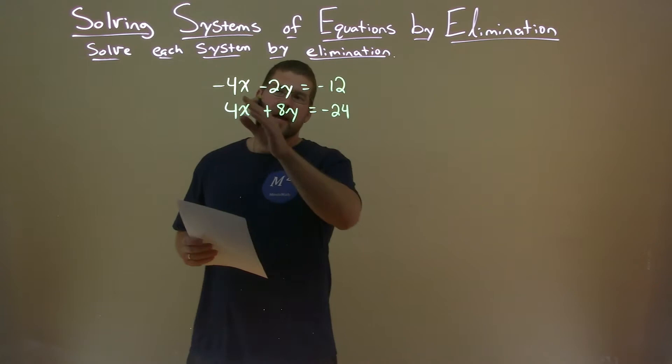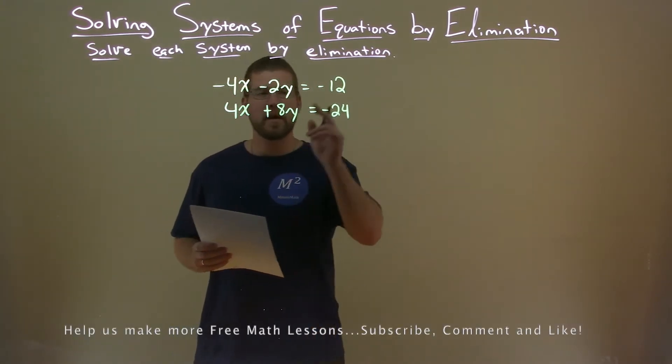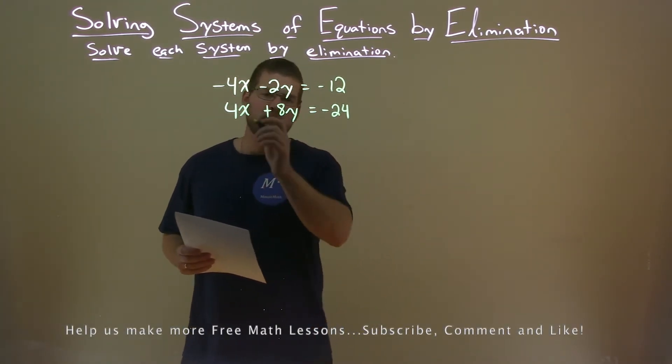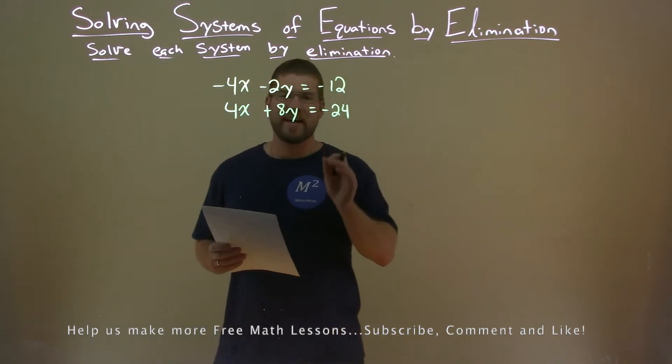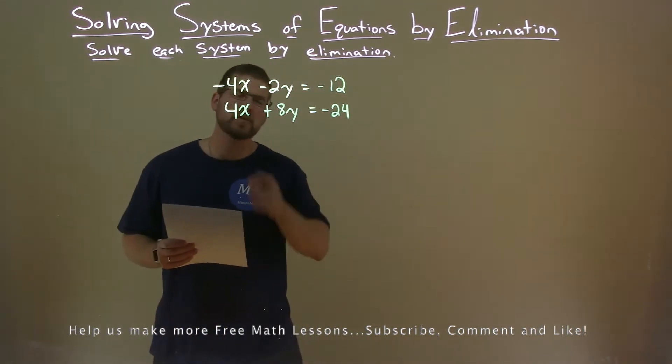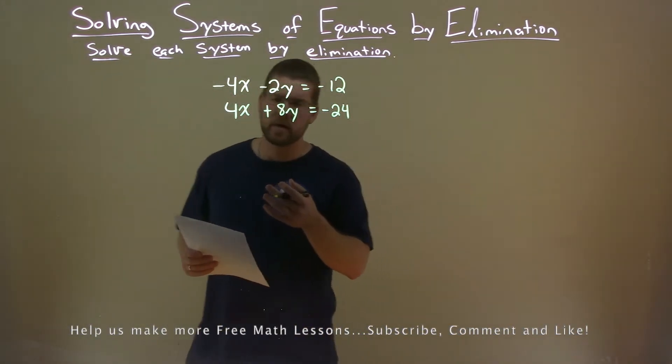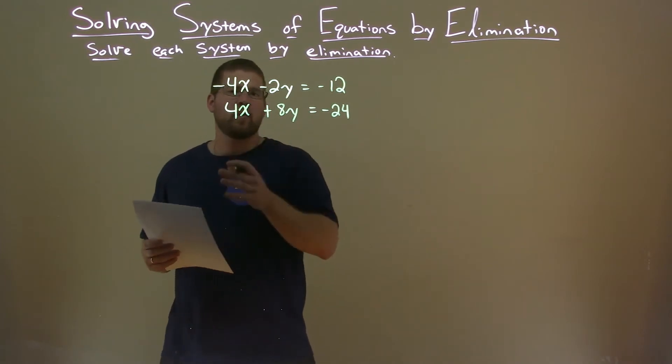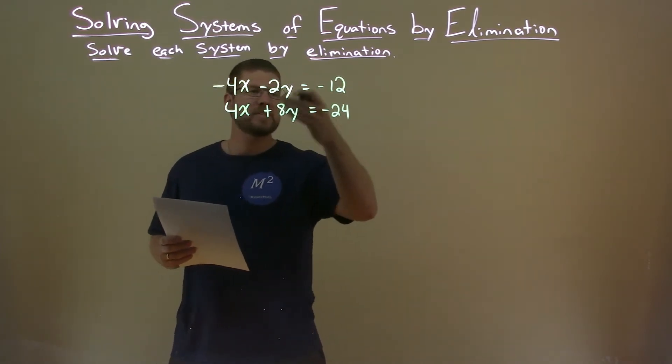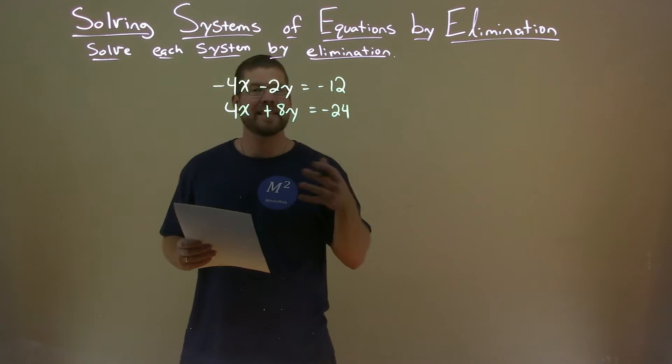So we're given the problem negative 4x minus 2y equals negative 12, and 4x plus 8y equals negative 24. And we're solving this by elimination. So elimination here, what I'm going to do is add these two equations to each other to eliminate the variable.